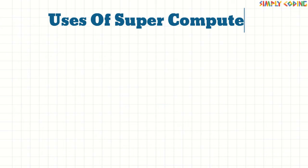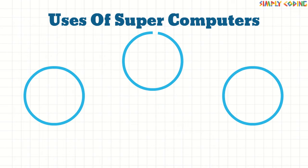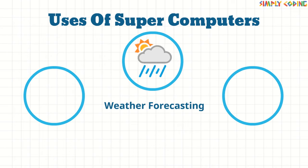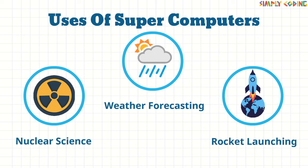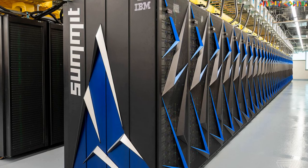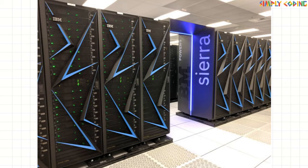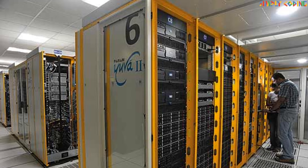Supercomputers are used for complex calculations such as weather forecasting, nuclear science, rocket launching, etc. Some examples of supercomputers are Summit, Sierra, Deep Blue, and Param, made by CDAC in India.